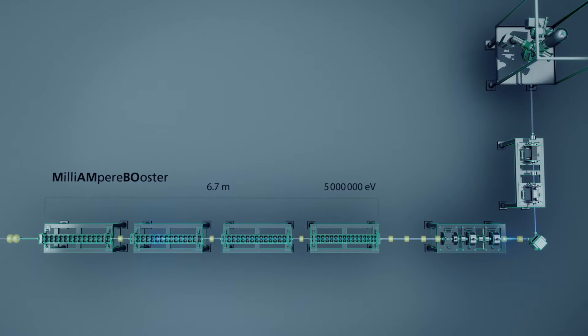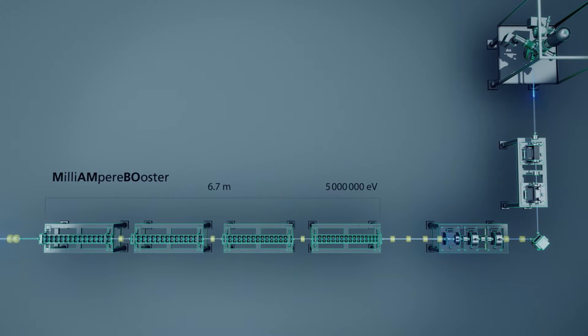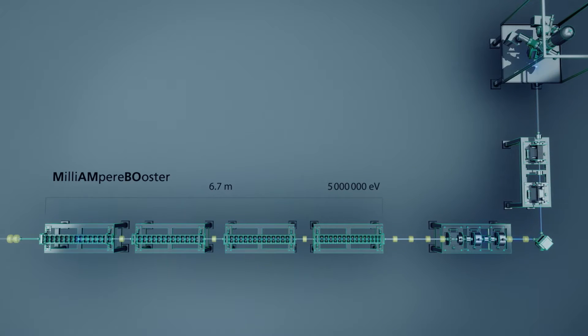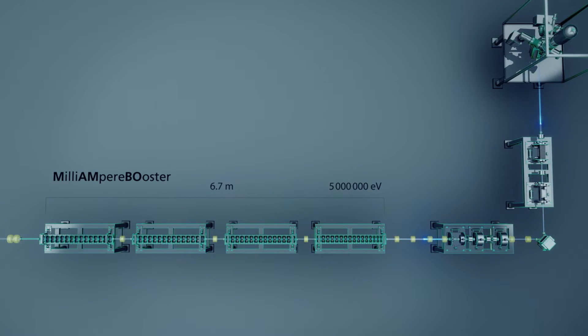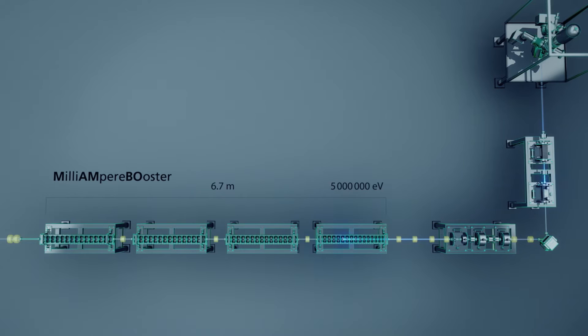Alternating electromagnetic fields increase the electron energy to 5 mega electron volts, MEV. The electrons exit the pre-accelerator at a velocity close to the speed of light.